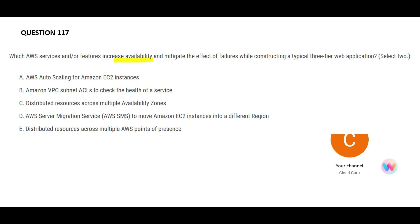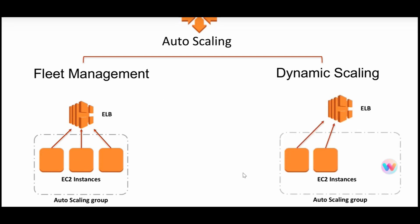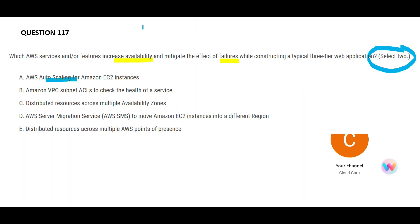The keywords here are: you want to increase availability and mitigate failures. You have to choose two answers. The first option talks about auto scaling — you create a pool of EC2 instances and put them in an auto scaling group, and you plug in ELB, that is Elastic Load Balancer. Will auto scaling increase your application availability? Yes.